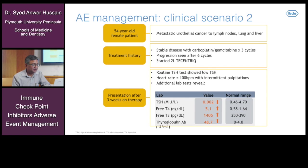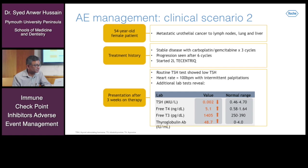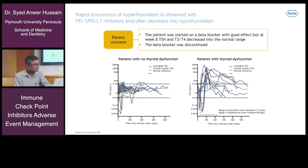Clinical scenario two: a 54-year-old female patient with metastatic urothelial cancer to lymph nodes, lungs, and liver. She had stable disease with carboplatin and gemcitabine for three cycles, then progressed after six cycles and was started on second-line T-centric. Routine TSH was low, heart rate was 100 beats per minute with intermittent palpitations. Additional blood tests showed a very low TSH at 0.002 (normal range 0.46 to 4.70). Free T4 was 5.1 and free T3 was 145 (normal range 250 to 390). Thyroglobulin was raised at 48.7.